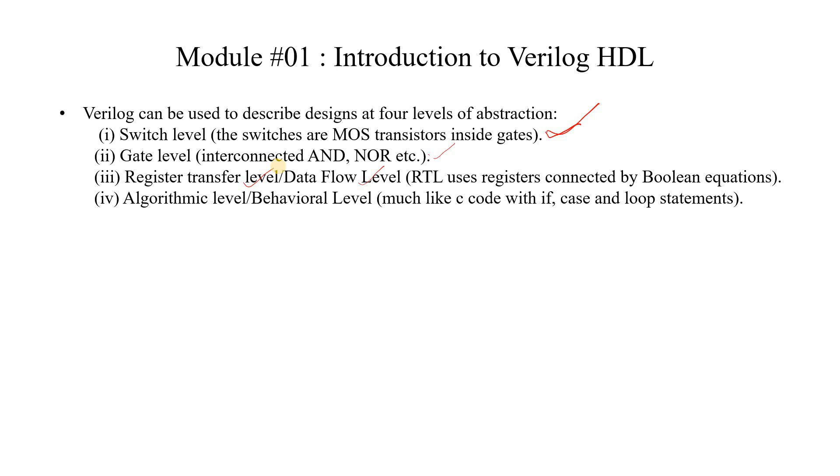The fourth type of abstraction is behavioral level. This is used when we are not given a design at the switch level, gate level, or in any form of boolean equations, but the design is given in behavioral form. That means we are just given a description of the design.